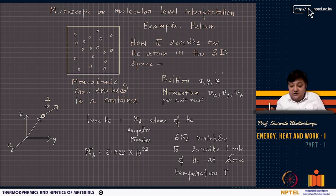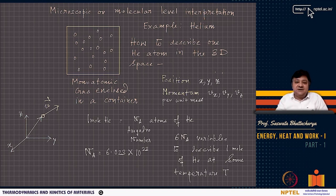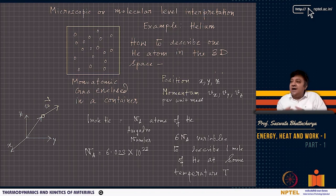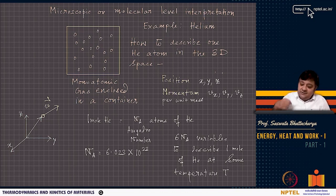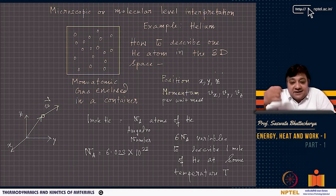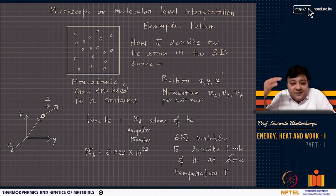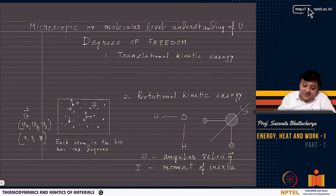6Nₐ variables is a very huge number. On the other hand, if I simply say the chamber contains 1 mole of helium at temperature T and specify the volume, that is good enough. Knowing the instantaneous position and velocity of 6.023×10²³ atoms is impossible.